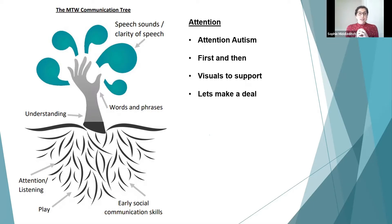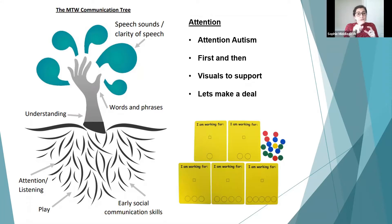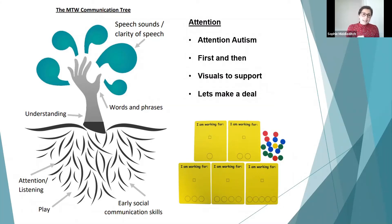Another tool for attention is 'Let's Make a Deal,' built by the PECS team — Picture Exchange Communication System — created by Pyramids UK. It uses visual cards: there's a 'I'm working for' card where you place a symbol of the motivating item, such as bubbles. Then you earn counters — for example, put one block on a tower and get a counter, complete a writing activity and get a counter. The child can visually see the reinforcement they're working towards and how many tasks remain.